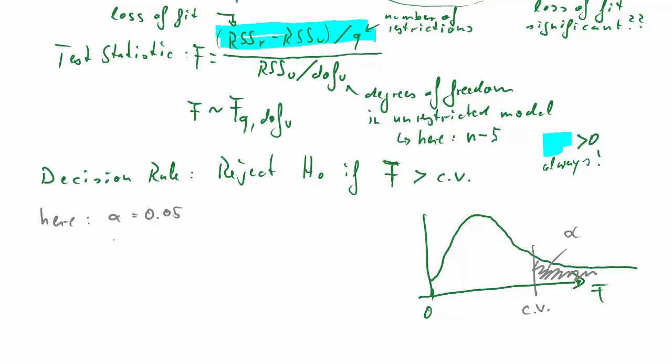So let's put some meat onto the bones. Let's say the alpha is 5%. Now our F-distribution, what degrees of freedom does it have? We have three restrictions. And the degrees of freedom of the unrestricted model is 428 observations minus 5, so 423 degrees of freedom.